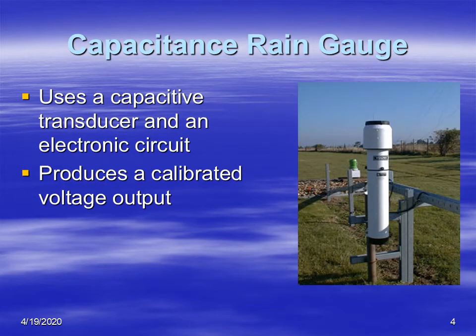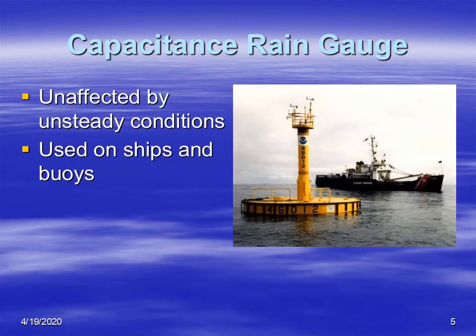The capacitance type rain gauge uses, as the name implies, capacitance. It has a capacitive transducer and also an electric circuit, and you get output in voltage which is directly proportional to the height of precipitation or water in this rain gauge. The nice thing about this rain gauge is that it can be tipped at certain angles and still record the amount of precipitation accurately. For this reason, it's usually used on objects that are not very stationary, things like buoys that are affected by waves or even on ships to measure precipitation.